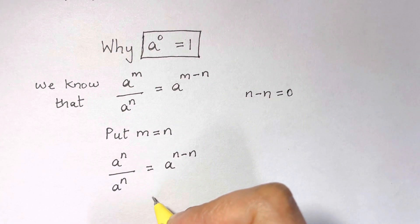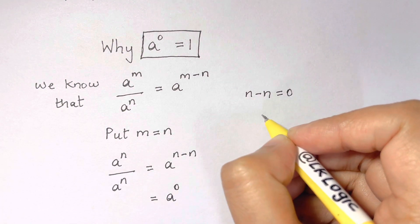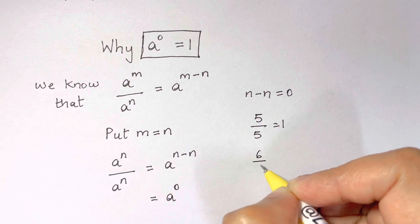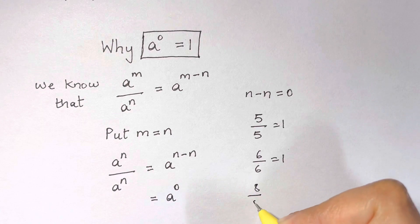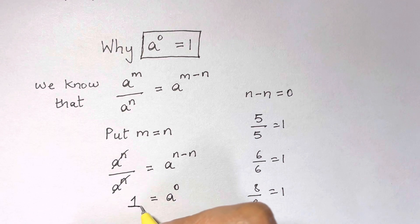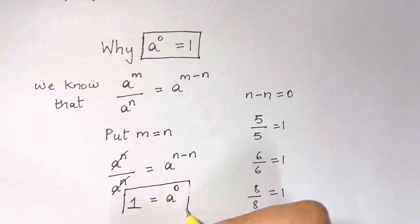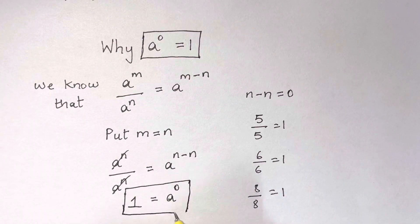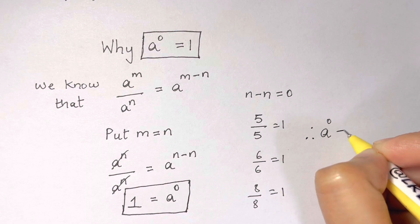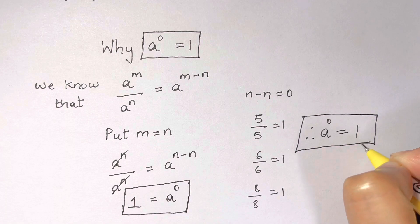Since n minus n equals zero, we get a to the power of zero on the right-hand side. On the left-hand side, any fraction with the same numerator and denominator equals one — for example, five over five equals one, six over six equals one, eight over eight equals one. So the left-hand side is one, and therefore a to the power of zero equals one. Whatever you put — any number — to the power of zero, the answer will always be one.